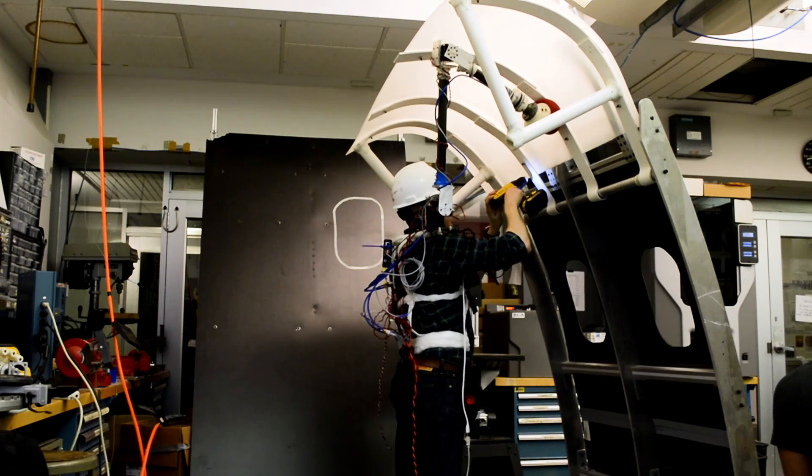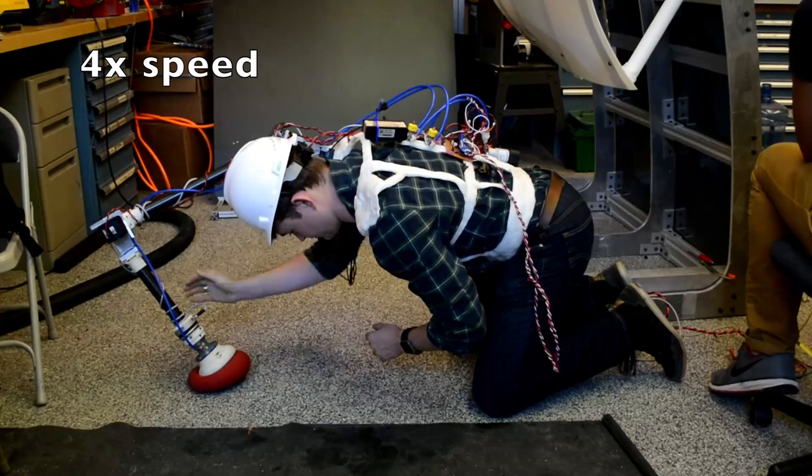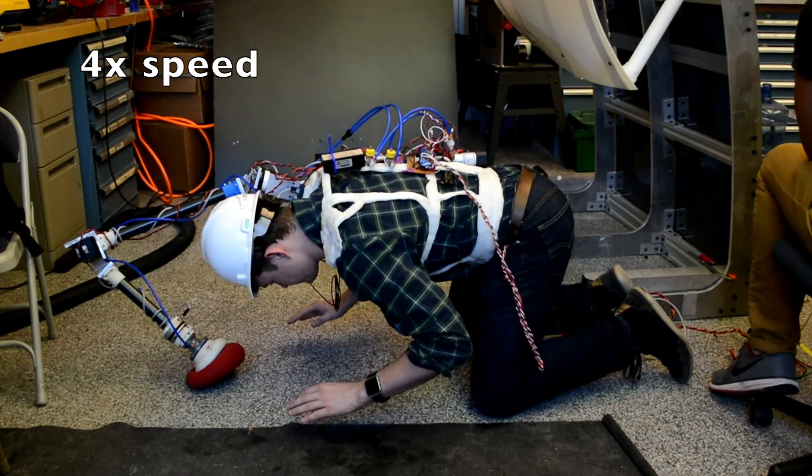A prototype arm braces objects above the head, holds tools, and frees up both hands for kneeling workers.